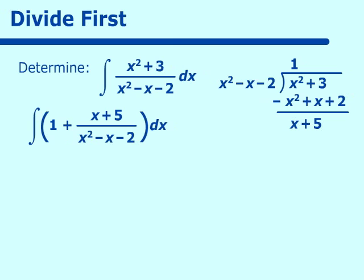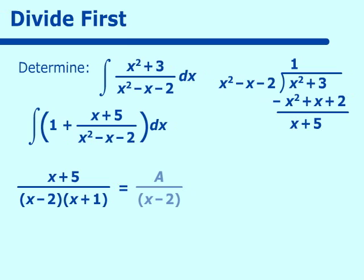We must separate x plus 5 over x squared minus x minus 2 into partial fractions. Factoring the denominator gives x minus 2 times x plus 1. We set up a over (x minus 2) plus b over (x plus 1). An important rule: any time the degree in the numerator is greater than or equal to the degree in the denominator, you must divide first before applying partial fractions.